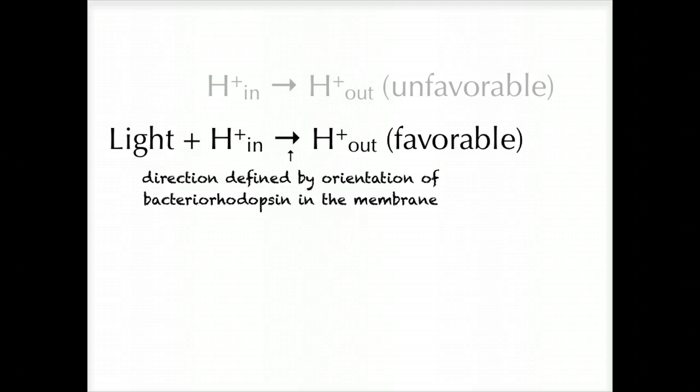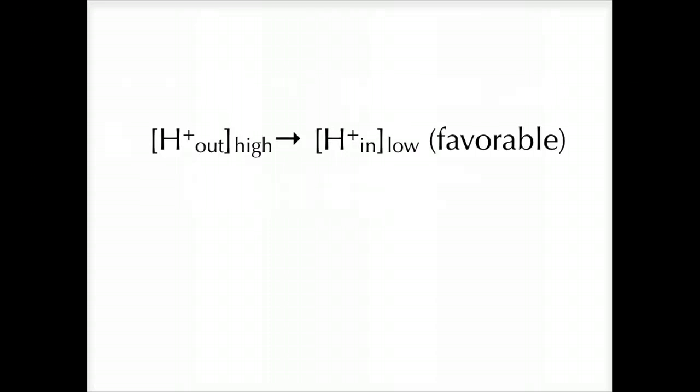Because all the bacteriorhodopsin molecules are oriented in the same direction in the membrane, the movement of hydrogen ions is directional in the presence of light. The end result will be a hydrogen ion gradient with hydrogen ion concentration outside higher than the hydrogen ion concentration inside.